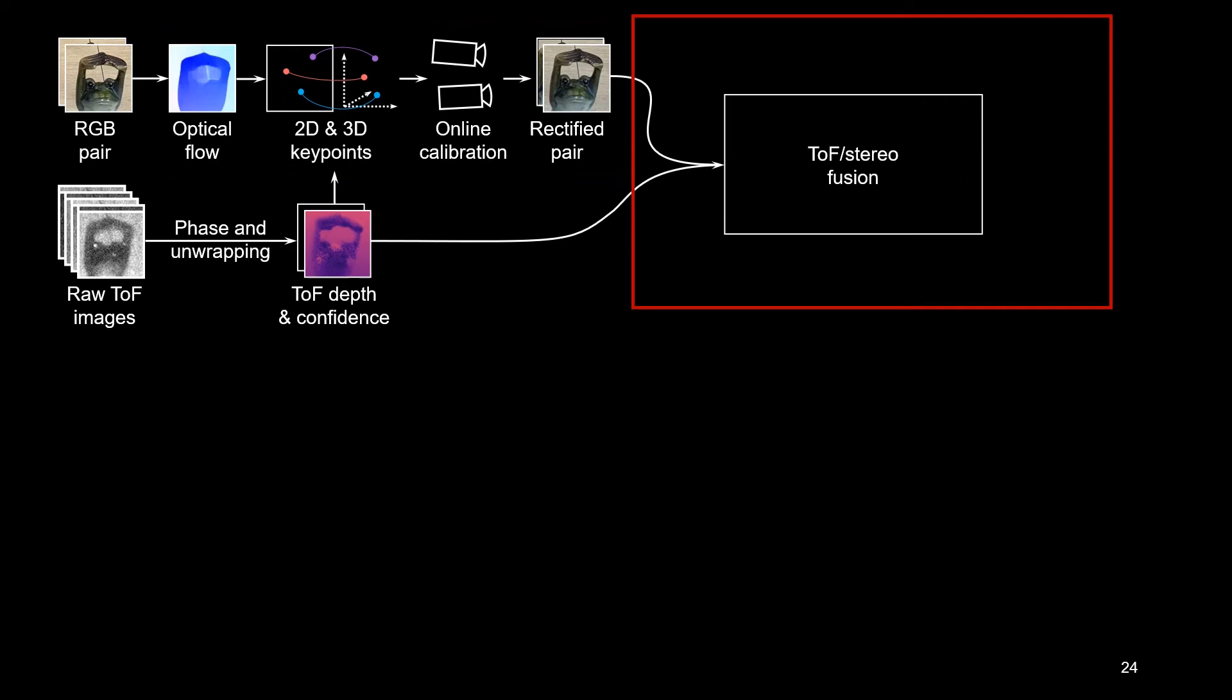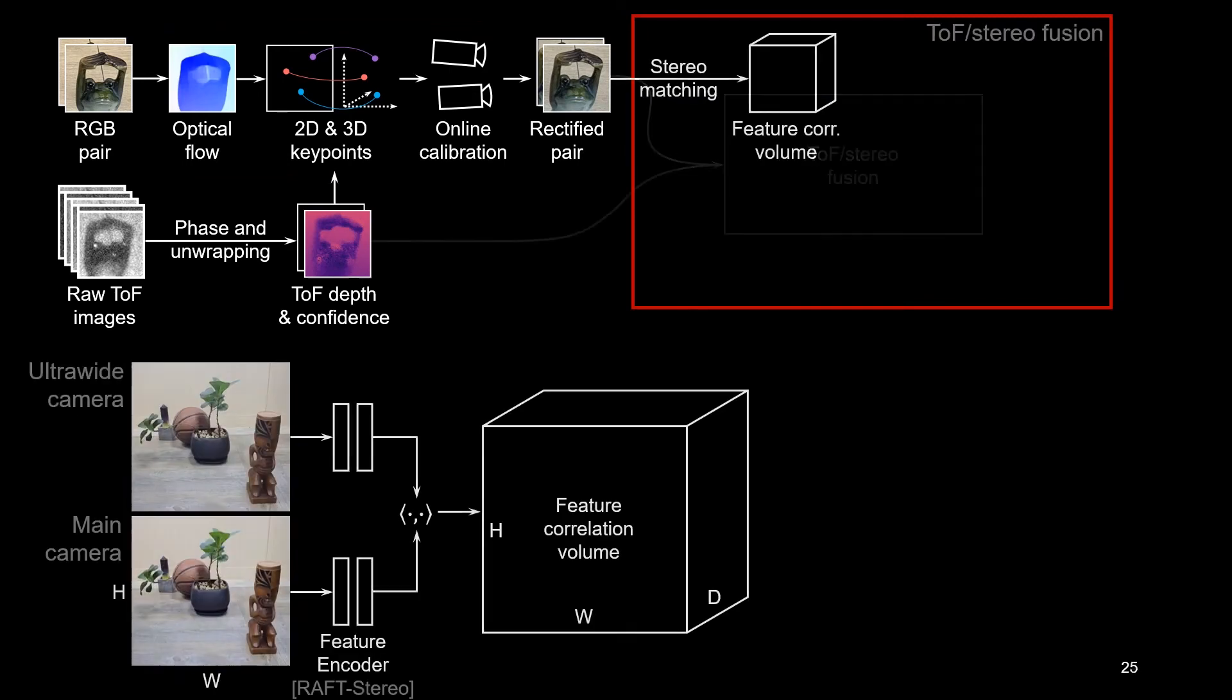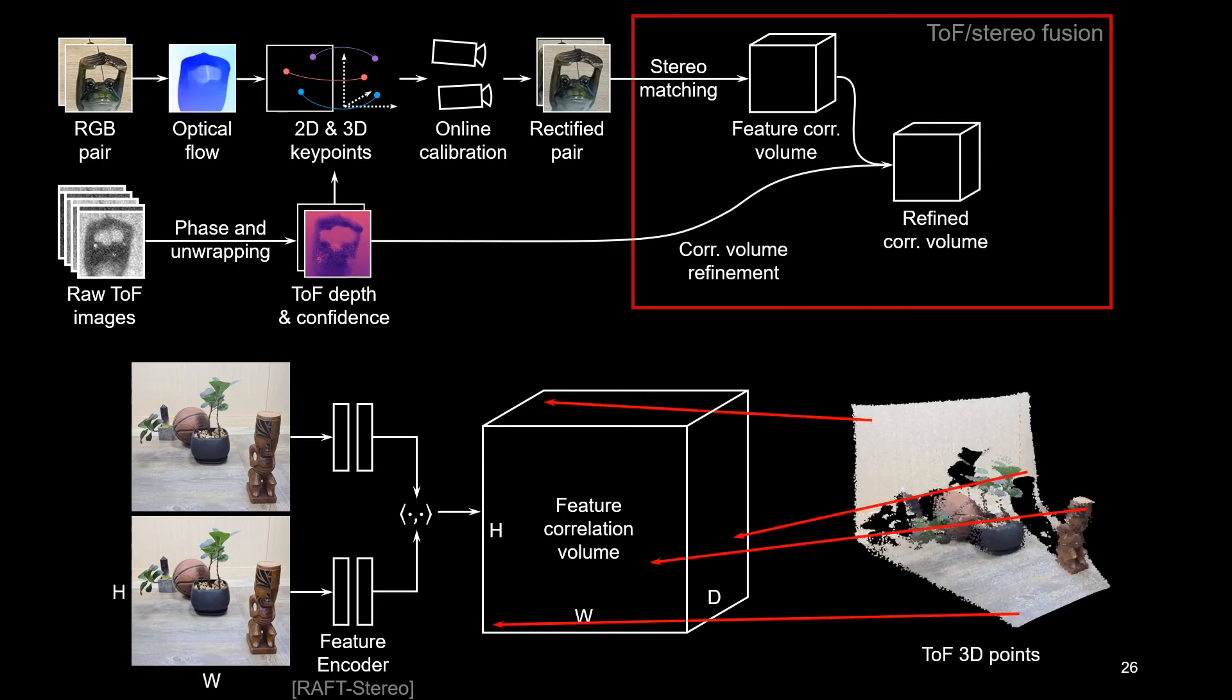Now we can fuse stereo and ToF estimates. From each RGB image, we extract deep features, then correlate them in a volume of different disparity candidates via their inner product. Then, we weight the correlation volume by the confidence of our 3D ToF samples. We reproject all 3D points into each RGB camera, compute the expected disparity from ToF, then add the ToF confidence at the expected disparity in the volume to artificially increase correlation.